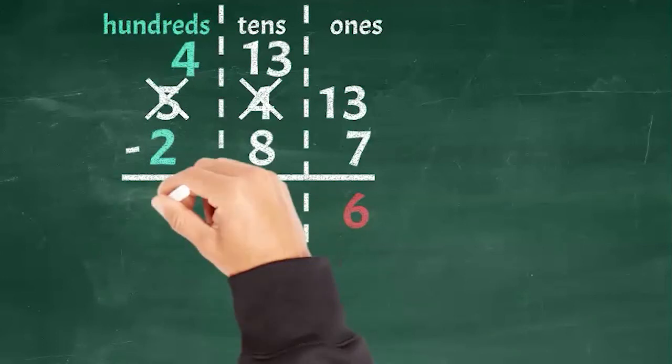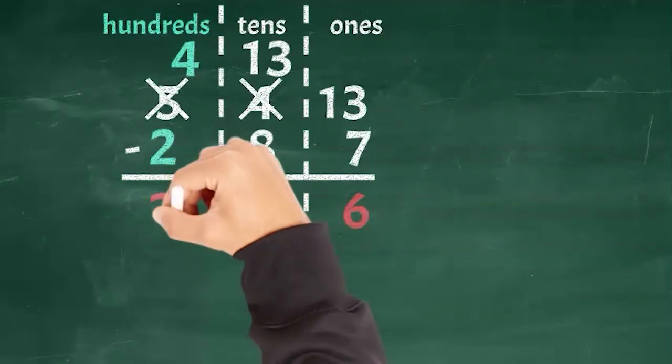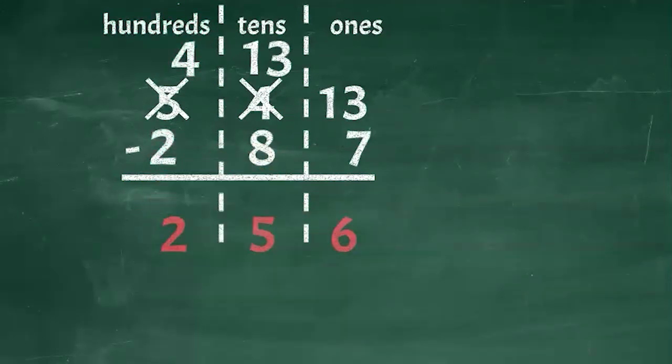So we can simply subtract four minus two, that gives us two hundreds. So let's write a two below the hundred stack, and there we have it. The answer to our subtraction problem, called the difference, is 256.